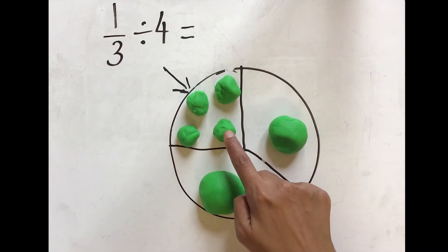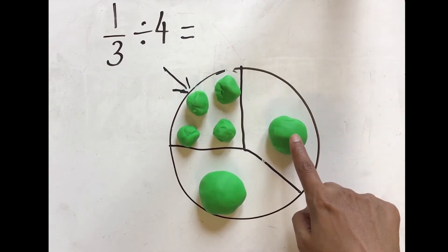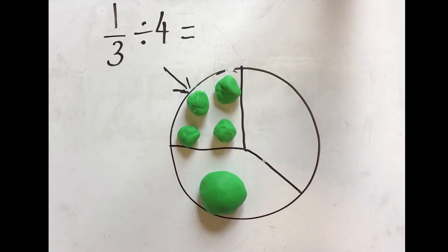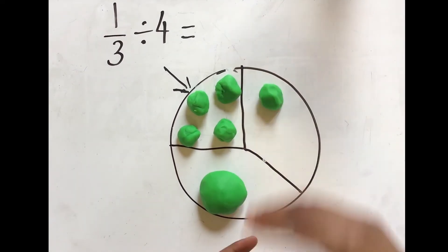Now, as you can see, these pieces are smaller while this piece is bigger. Let's do the same for the remaining pieces, since they are part of the whole. Split them into 4 equal parts.